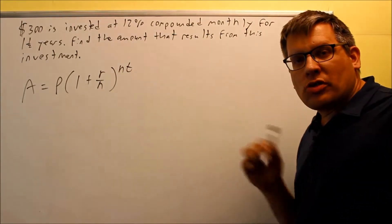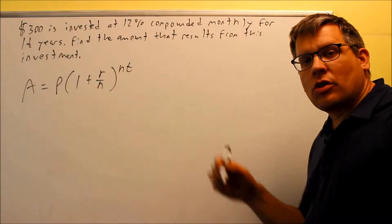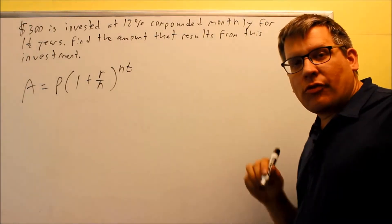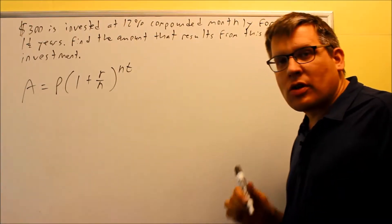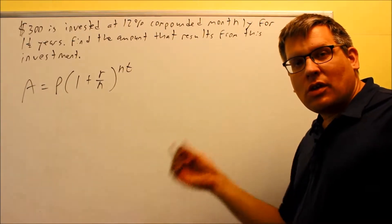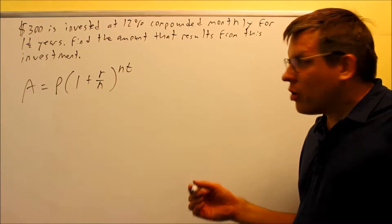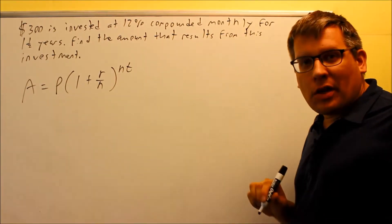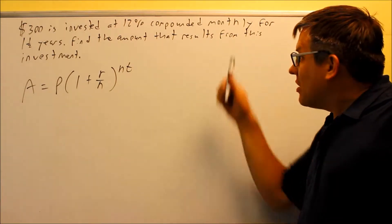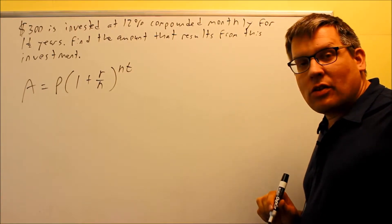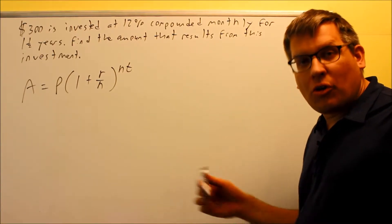The N is the number of times it's compounded per year. So in the notes, we have a list of all the different types of keywords to look for. Semi-annually would be N is 2, annually N is 1. We have quarterly where N is 4. This problem has the word monthly. The word monthly means that we're going to be compiling this 12 times per year because there's 12 months in one year.